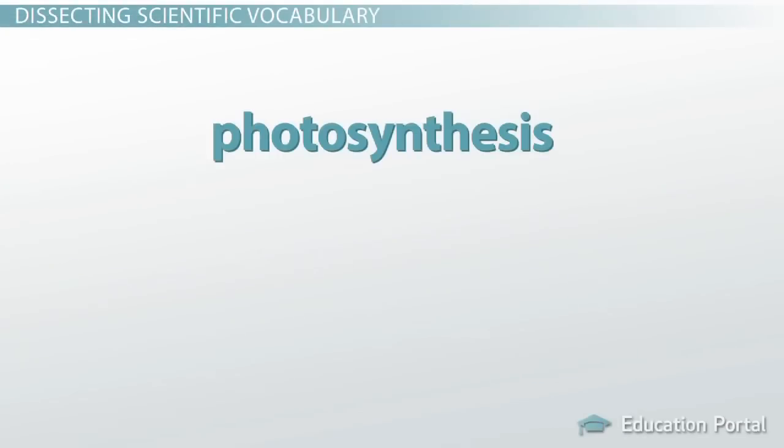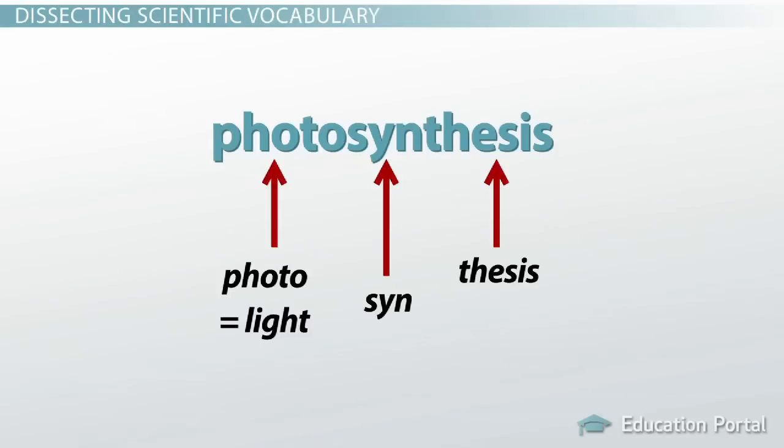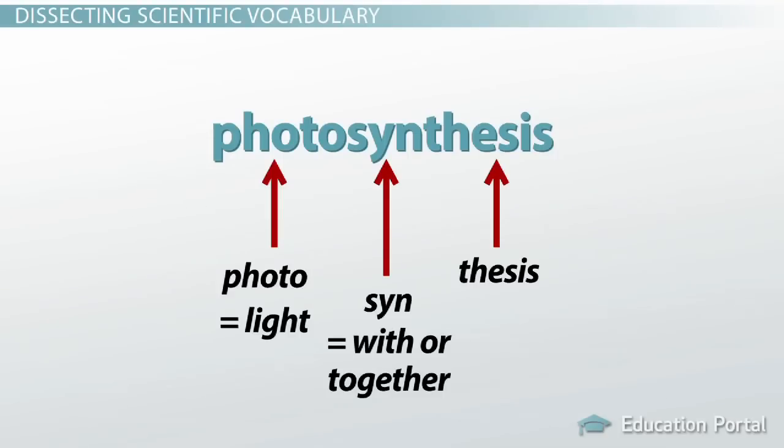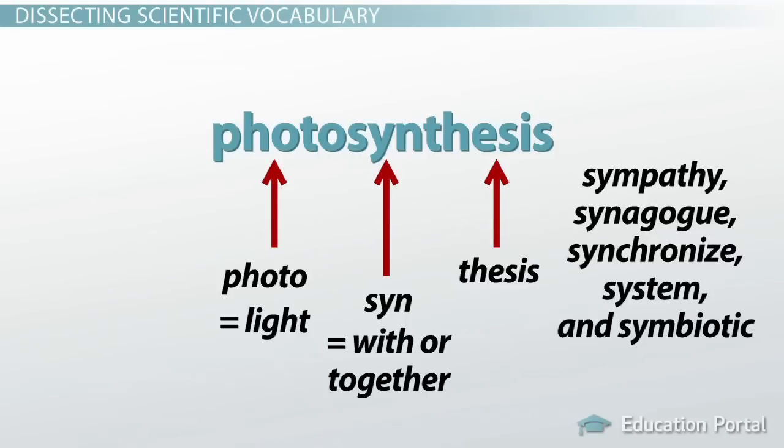Take the word photosynthesis, for example. It comes from the Greek roots photo, syn, and thesis. Photo means light, as you probably already knew from other words like photography, photon, and photocopy. The word part syn means with or together. This might seem like a foreign definition to you, but think about familiar words like sympathy, synagogue, synchronize, system, and symbiotic.